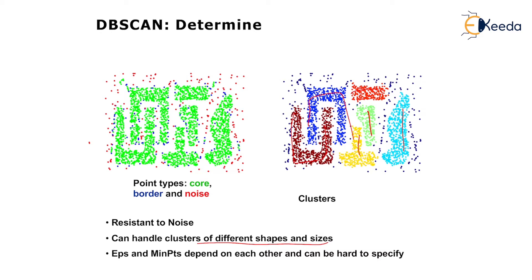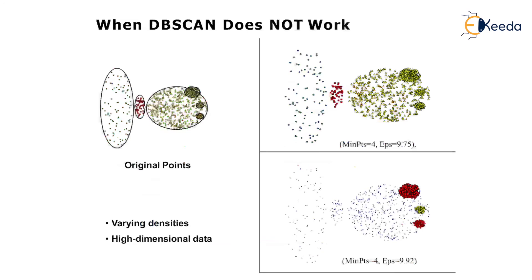DBSCAN can handle clusters of different shapes and sizes, unlike hierarchical clustering. However, eps and minimum points are dependent on each other and can be hard to specify. DBSCAN does not work well with varying density data and high-dimensional data.